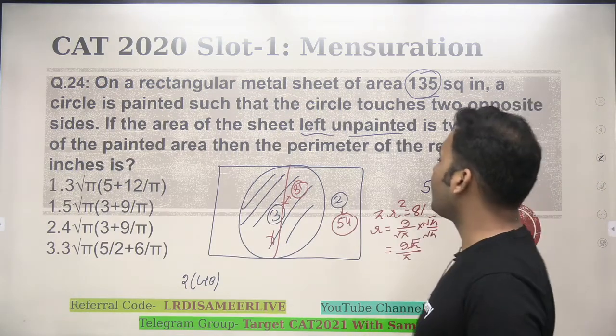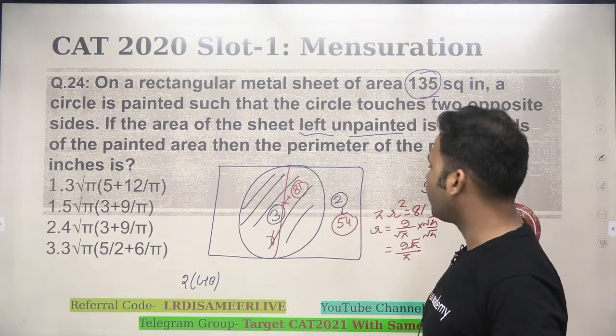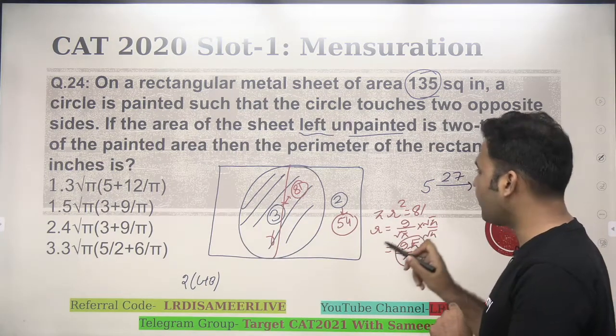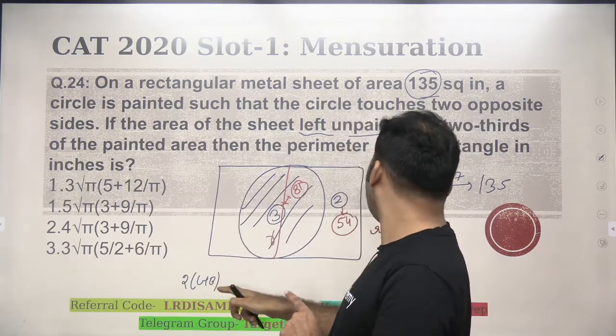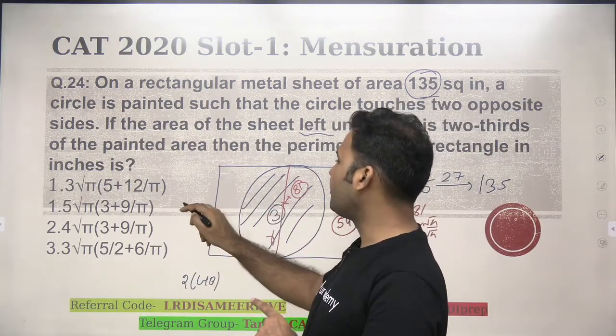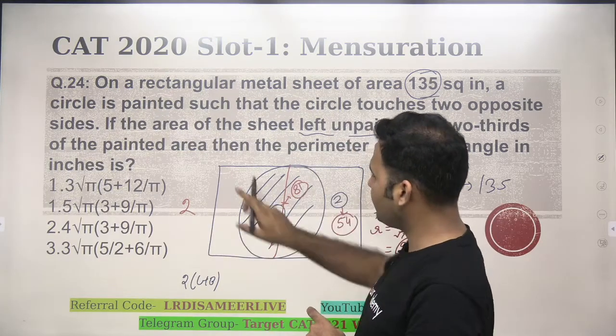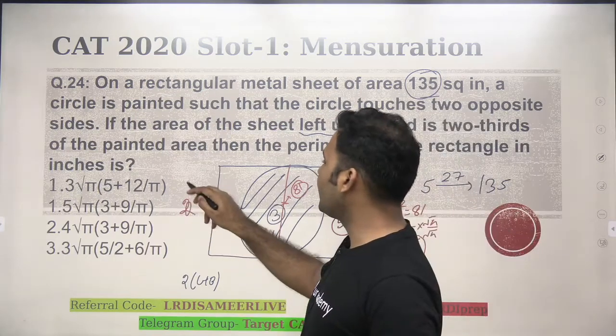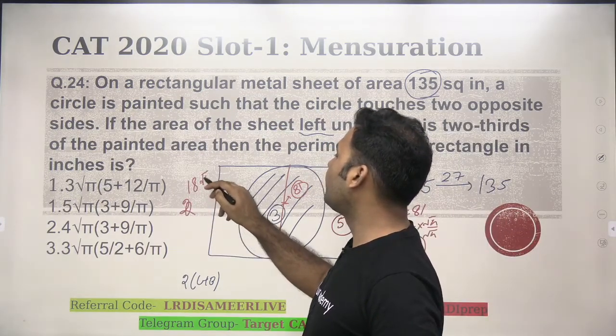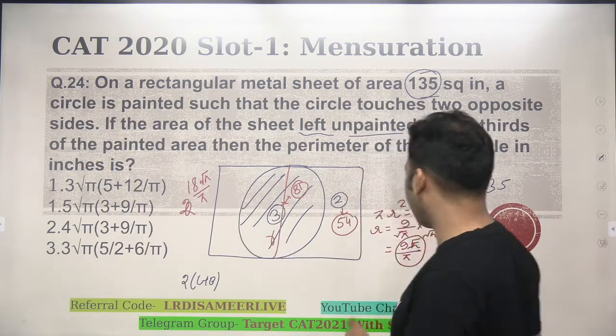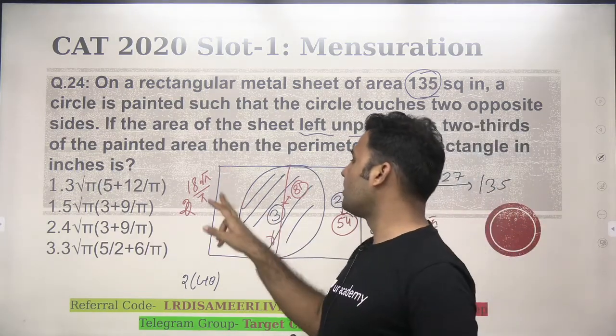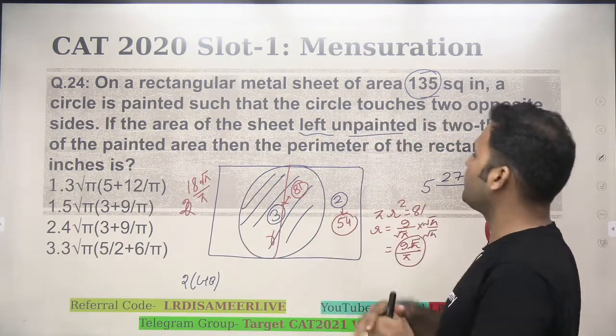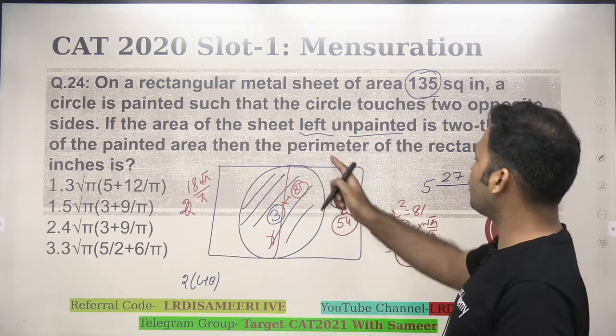And then, you also see that this whole area is given to me as 135. If the radius is 9 root pi upon pi, can I say that this whole side, the length of this whole side will be two times of the radius, because radius plus radius is diameter, which is equal to the width. So, two times of this, that means 18 root pi upon pi will be equal to the width of the rectangular sheet. And because the area is 135, now I can also find out the length, length into width is the area that is 135.